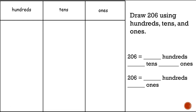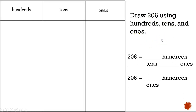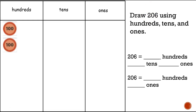This is what we're going to be doing today. I have a place value chart and I'm going to use disks to draw the number two hundred and six using hundreds, tens, and ones. First, I need to figure out how many hundreds I need — looks like I need two. So let's add two: one, two.